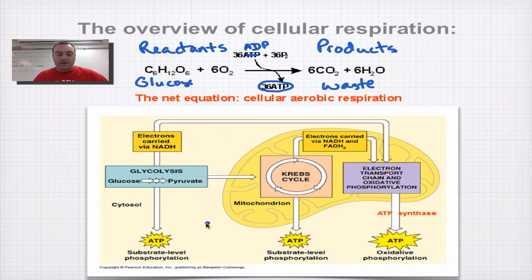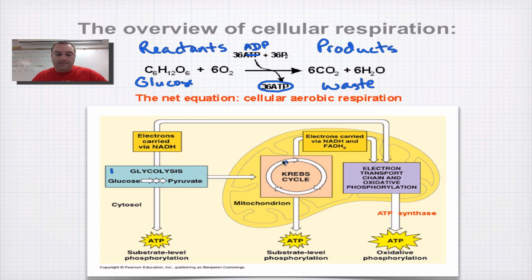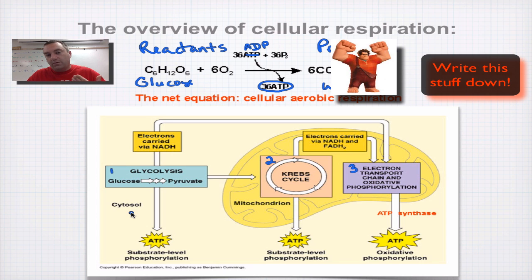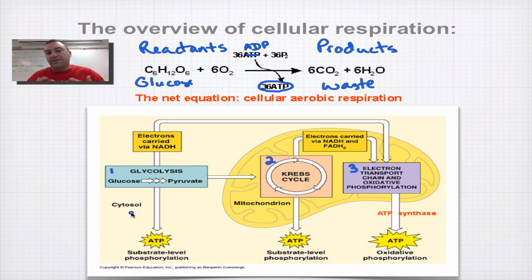There are three steps in cellular respiration: glycolysis, the Krebs cycle, and the electron transport chain — steps one, two, and three. The diagram shows cytosol, which is the liquid part of the cytoplasm — for our purposes, cytosol and cytoplasm are the same thing. You make a little bit of ATP in step one. The Krebs cycle occurs in the matrix of the mitochondria.